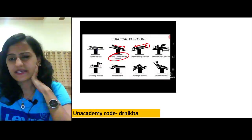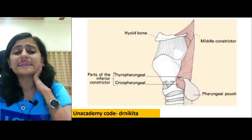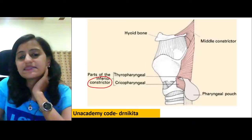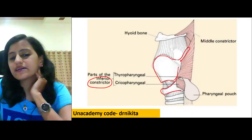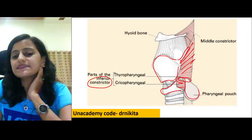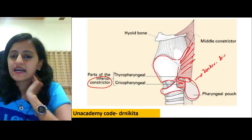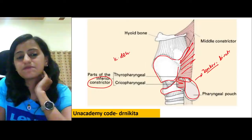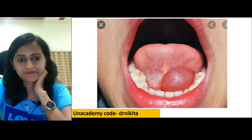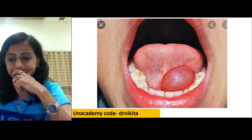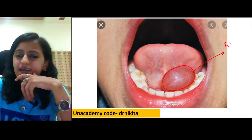Killian's dehiscence is in the inferior constrictor muscle, between the thyropharyngeus and cricopharyngeus — through this comes the Zenker's diverticulum (pharyngeal pouch). A trans-illumination-positive lesion below the tongue is called a ranula.